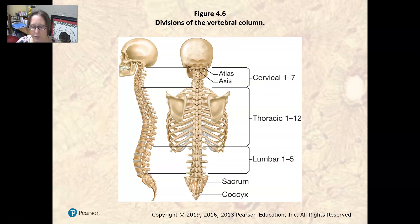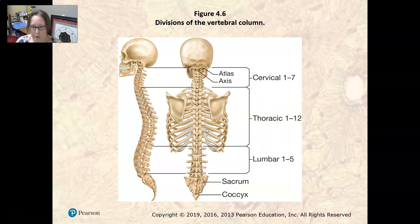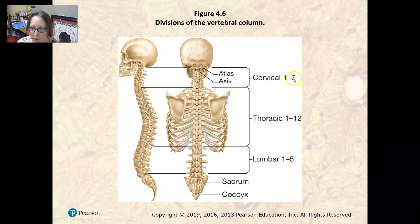The vertebral column has five divisions. Cervical is at the top and means neck. Thoracic is where the rib cage attaches. Lumbar is the lower back. Then there are the sacrum and coccyx. There are seven cervical vertebrae; C1 and C2 are the atlas and axis — the first vertebrae that attach the skull to the vertebral column and allow most head movements.